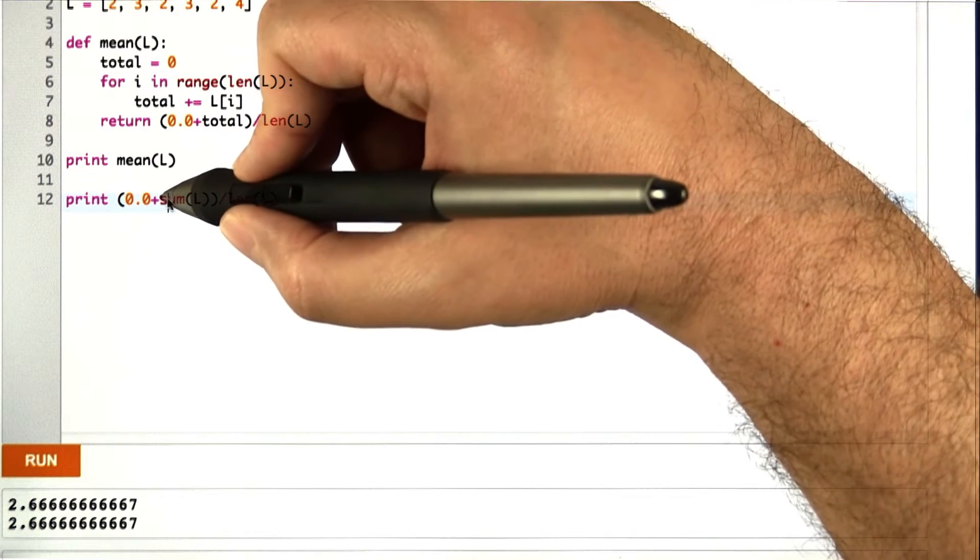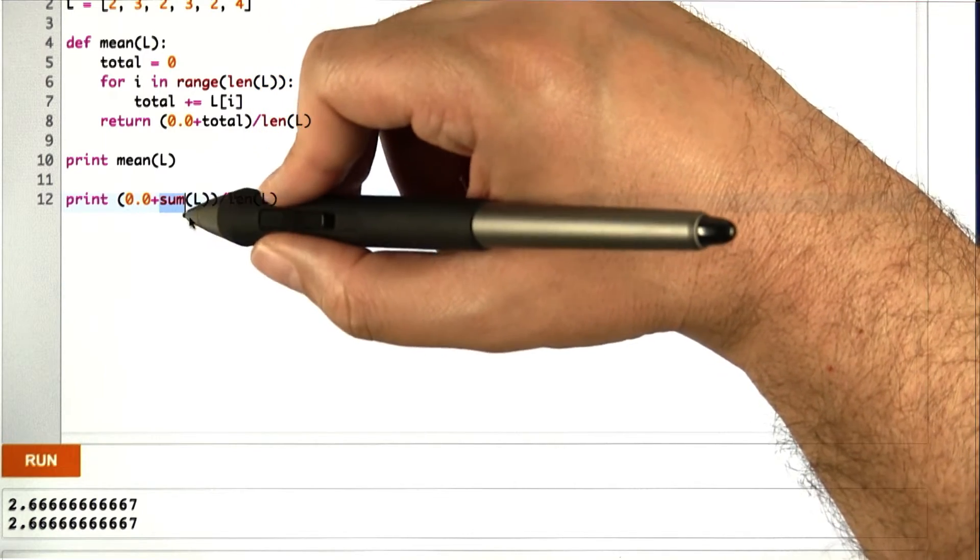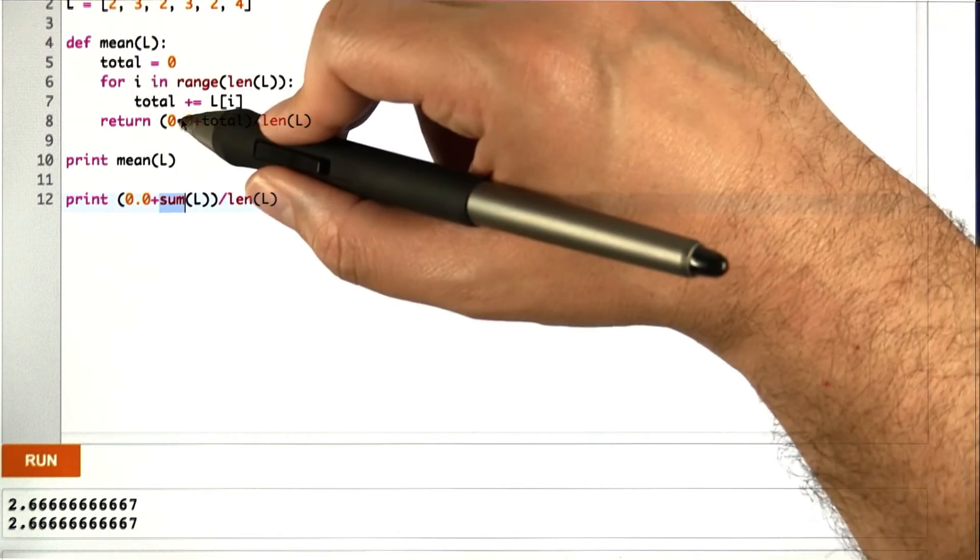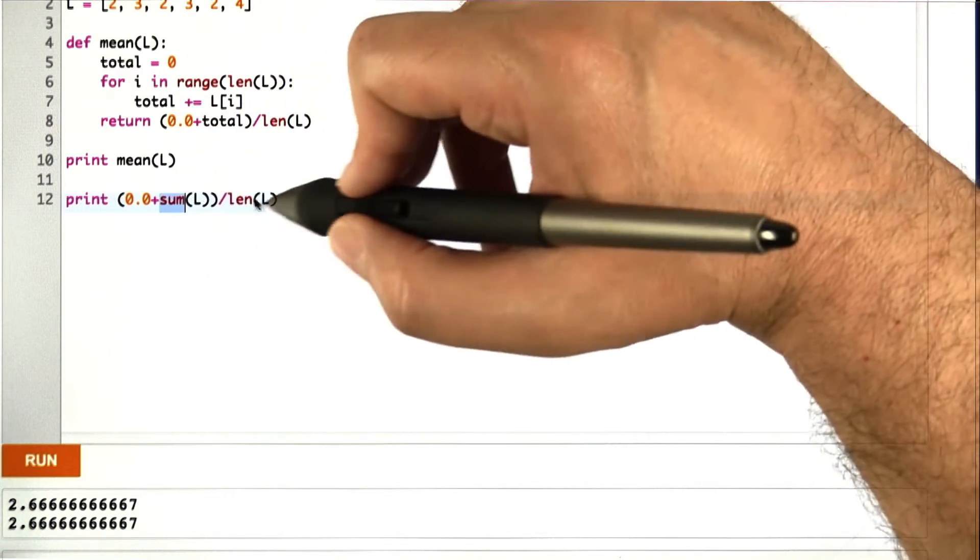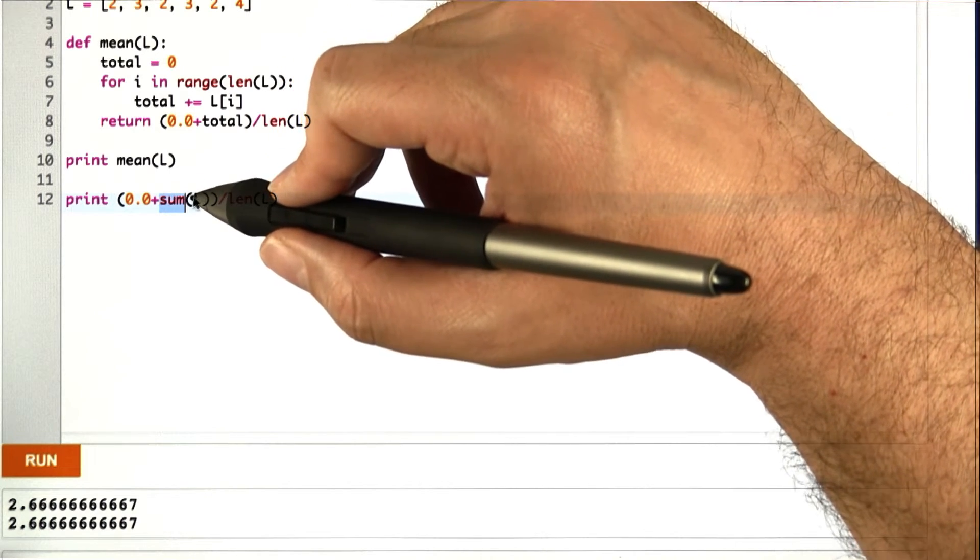You have to keep in mind that this sum command here is actually just shorthand for a loop like this. So it really is running over all the elements of the list internally. So even though it looks like it's big theta of 1, this still is big theta of the length of this list, or big theta of n.